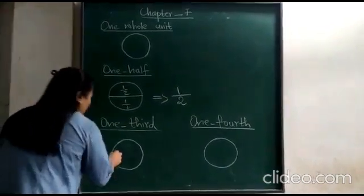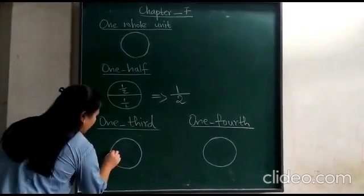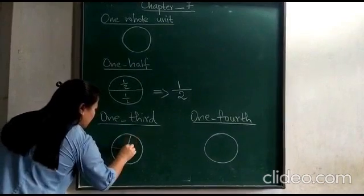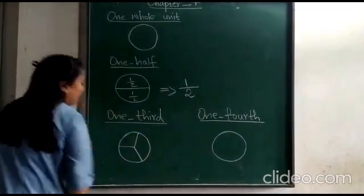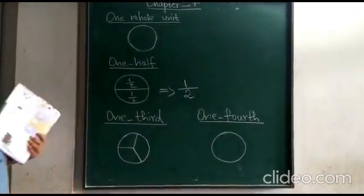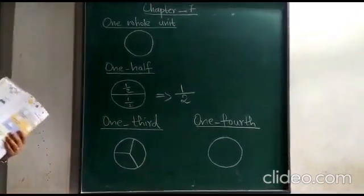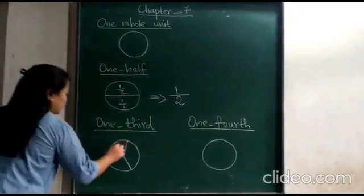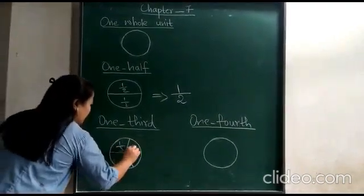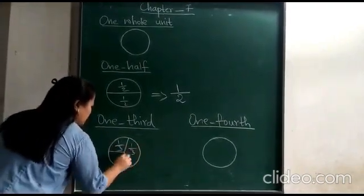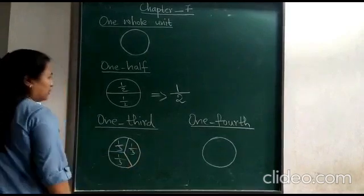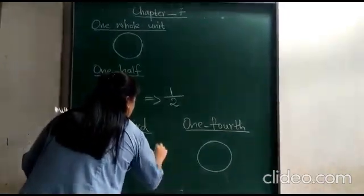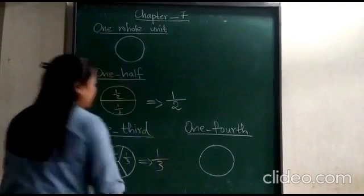Now, if we divide this circle into three equal parts, then each part is known as one-third. Each part is known as one-third, and it is written as 1/3.